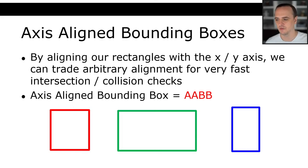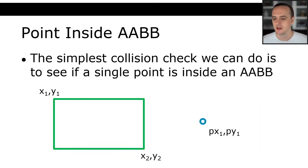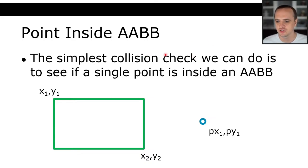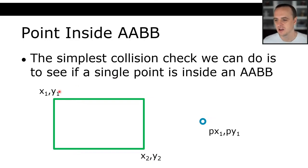Let's talk about some of the physics involved with axis-aligned bounding boxes. The simplest collision check we can do with an AABB is to see if a single point lies within an axis-aligned bounding box. You can specify a rectangle in a number of different ways — really two main ways. The first way would be to record the top-left position x1, y1 and the bottom-right position x2, y2.